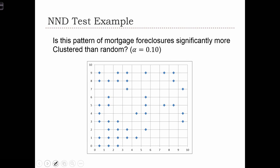Here is the mortgage pattern example for the foreclosure data. Just so that you understand what we're doing, the nearest neighbor distance for that point is 1. For this point, well, it's also 1, or it's that 1.